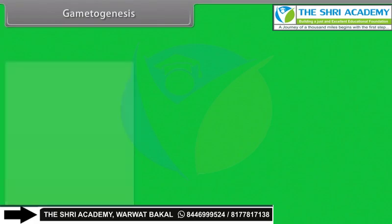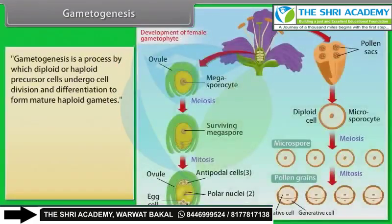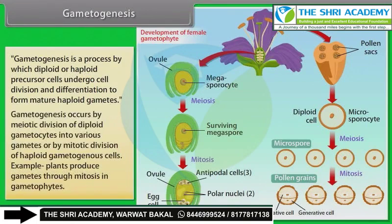Gametogenesis is a process by which diploid or haploid precursor cells undergo cell division and differentiation to form mature haploid gametes. Gametogenesis occurs by meiotic division of diploid gametocytes into various gametes, or by mitotic division of haploid gametogenous cells.